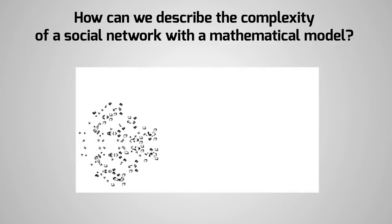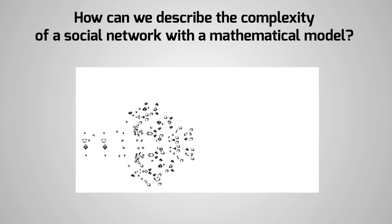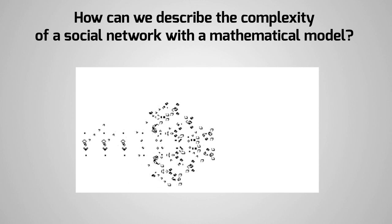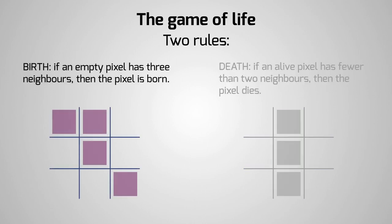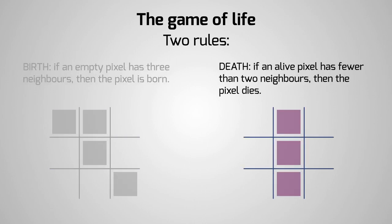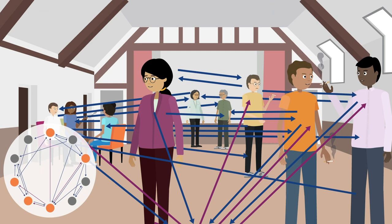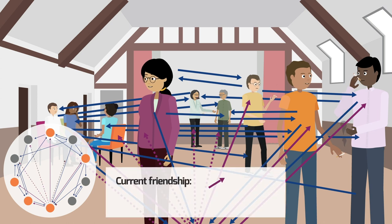Agent-based models, introduced in the 1970s, show how complex structures can arise from simple rules. The Game of Life model had only two deterministic rules for evolution, but it produces intricate patterns. Social network evolution is stochastic and can be modelled using Markov dependency.